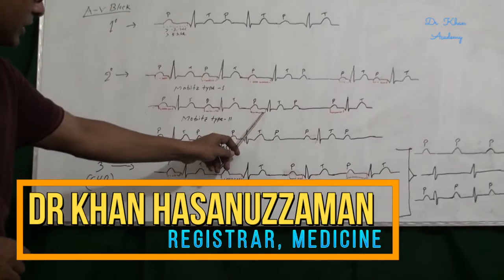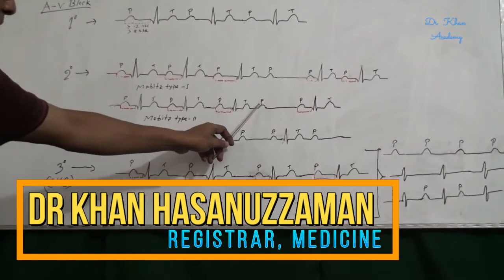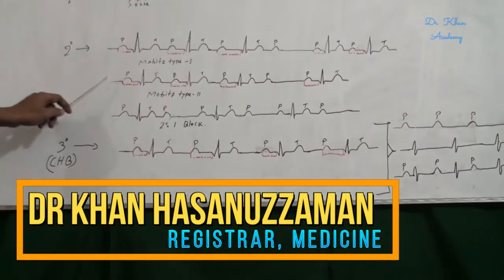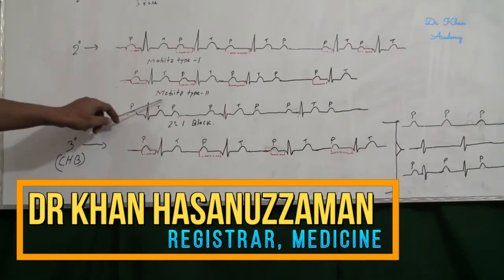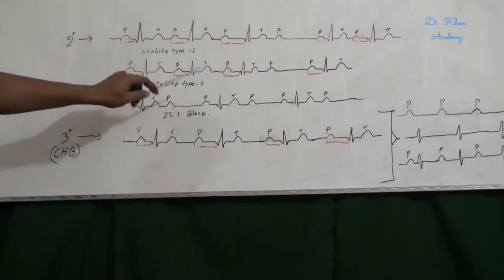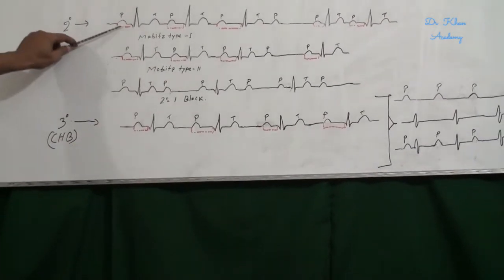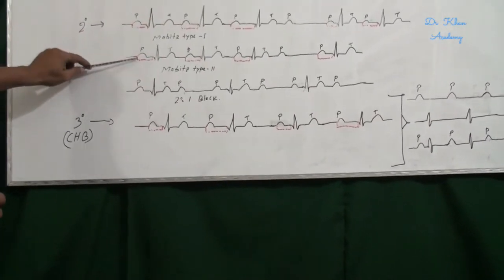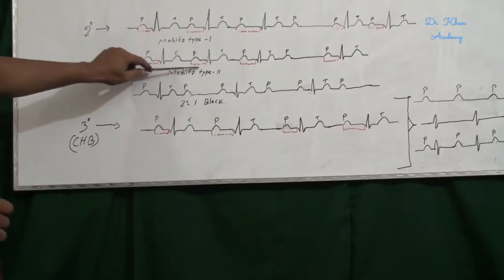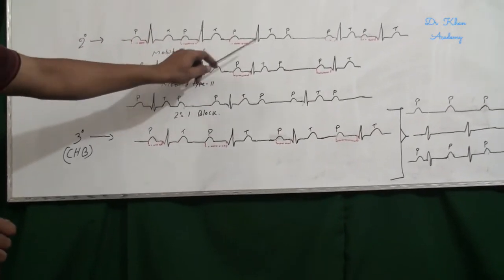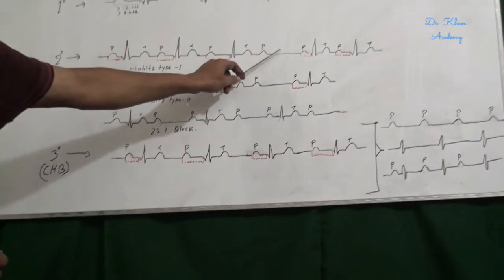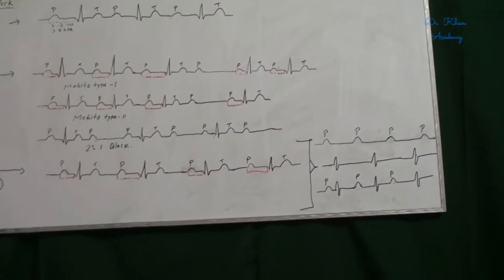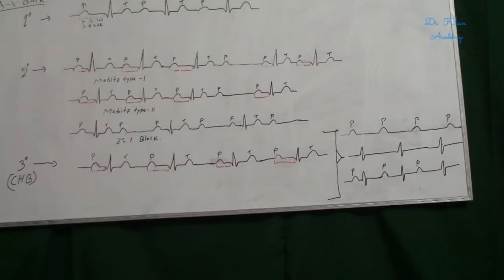When the PR interval is constant and some P waves are not conducted to the ventricle, this is also second degree AV block but it is Mobitz Type 2. Mobitz Type 1 has a gradually increasing PR interval, while Mobitz Type 2 has a constant PR interval with some P waves not conducted.